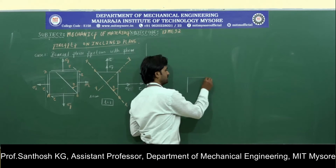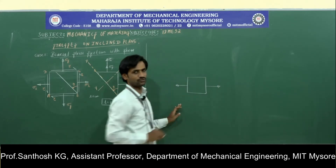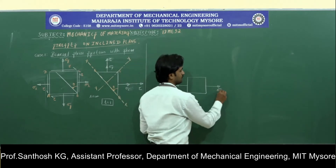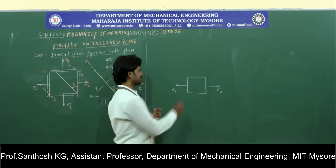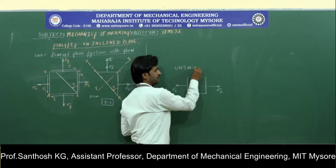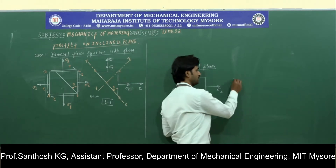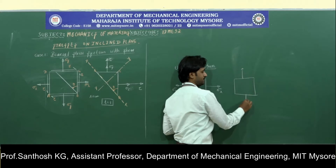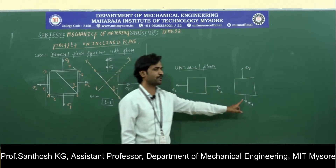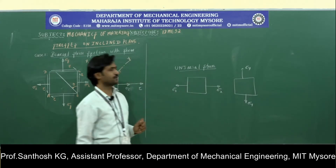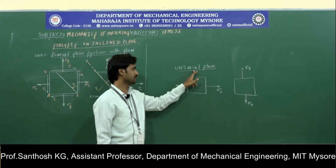Suppose you have an object, and on the object you are applying stresses or force in only one direction, then the stress system is called a uniaxial stress system. A uniaxial stress system is one where the stress is applied in only one direction — it may be either sigma x or along the y direction. If you apply the stress along the x-axis or only along the y-axis, we call it a uniaxial stress system, where 'uni' represents single and 'axial' is the direction.